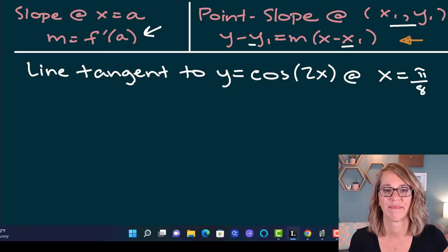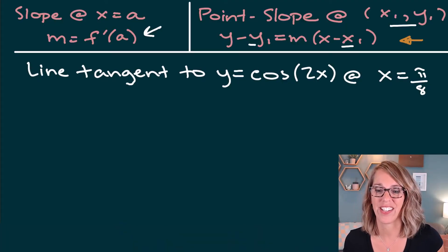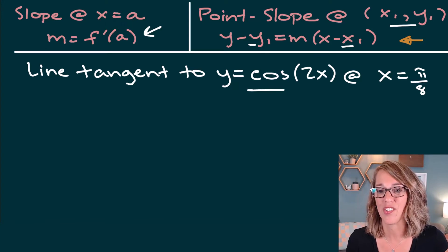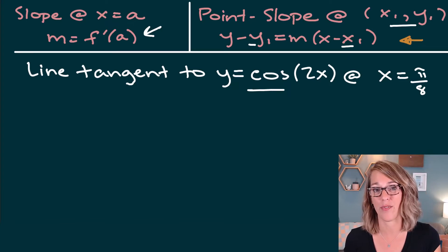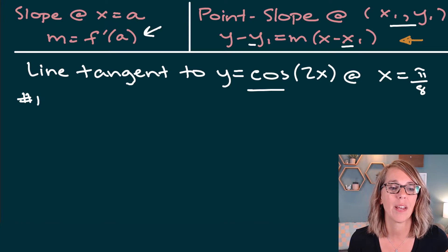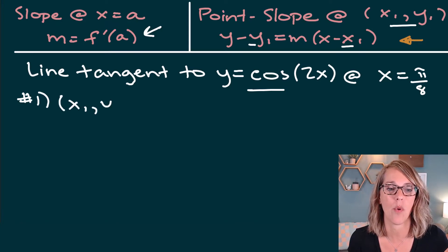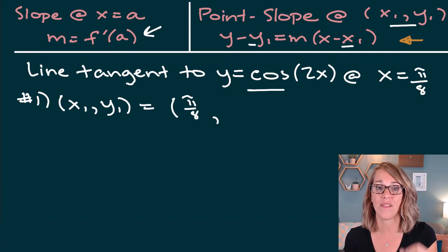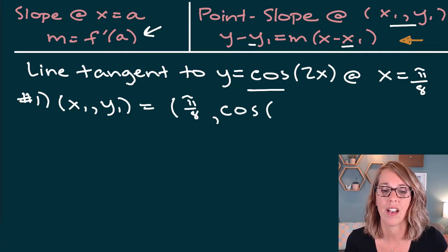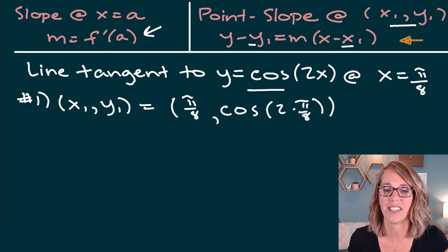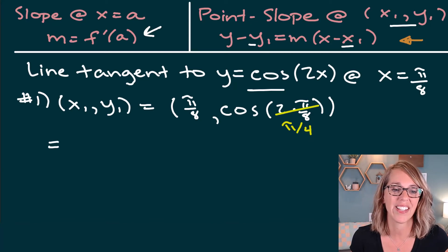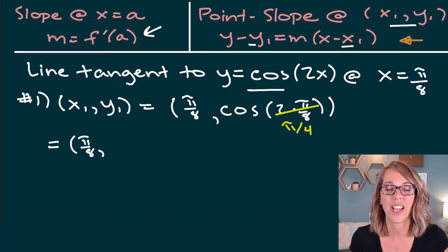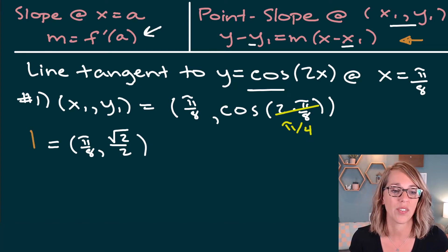For the next example, I'm looking for the equation of the tangent line to f(x) = cos(2x) at x = π/8. I'll dive right into the steps. Step one, find the point x₁, y₁. My x = π/8, and I need f(π/8) = cos(2 × π/8) = cos(π/4), which equals √2/2. So my point is (π/8, √2/2).